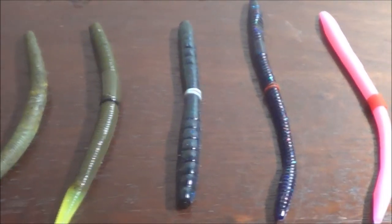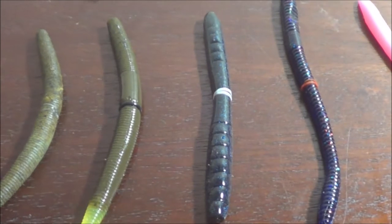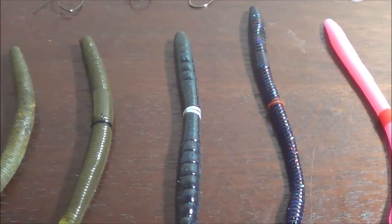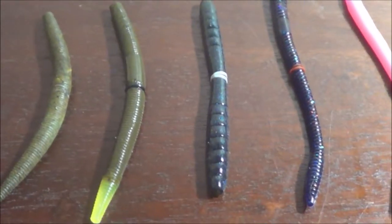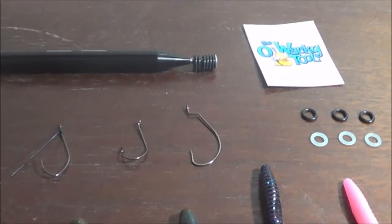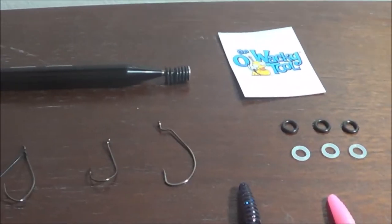As you can see, most of the baits I'm going to show you are going to be worms, stick baits, or trick worms. I'll show you the hooks I use and then I'll explain this tool and these little O-rings.